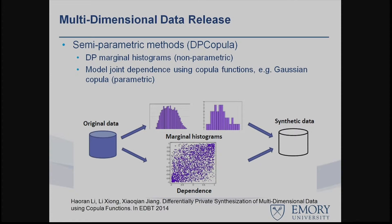Once we model these two parts separately, we build differentially private histograms using existing DP histogram methods, and then learn the dependence structure — for example, using a parametric function like a Gaussian copula, which represents dependencies using a Gaussian distribution.